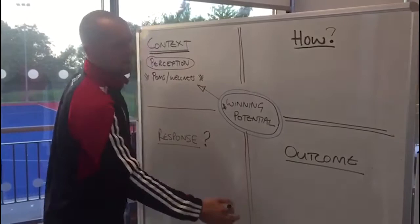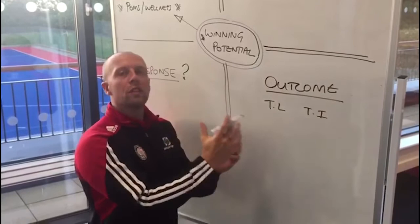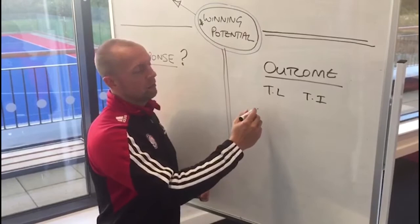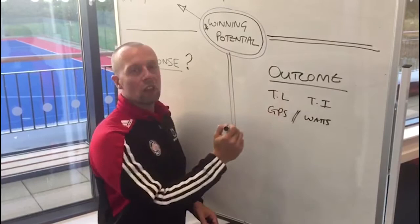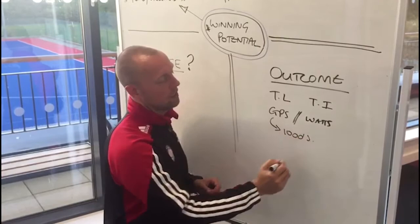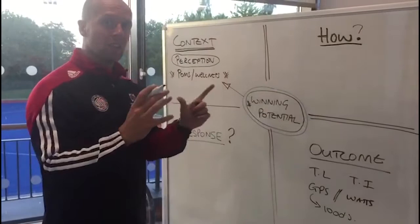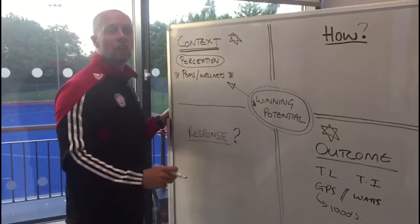The outcome column is where I'm really interested in training load and training intensity — quantifying the training session that I've just done. Think of GPS data, think of power outputs like watts. In nice, digestible, coach-friendly language, we want to see what the session was like and, against my pre-planned programming, did I get what I thought I should? GPS is now giving us thousands of data points that we can pore over, and that's really where monitoring technology has led us so far — understanding training load better against pre-planned outcomes.